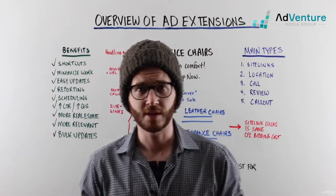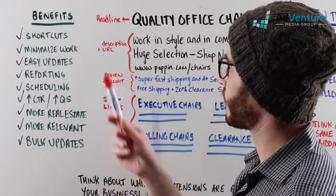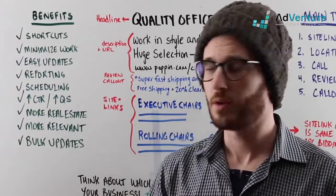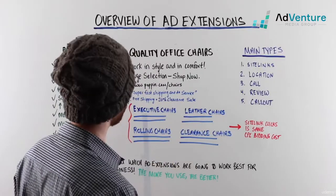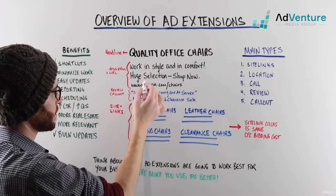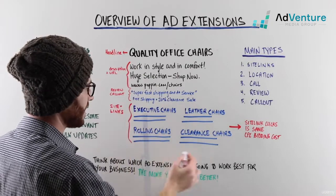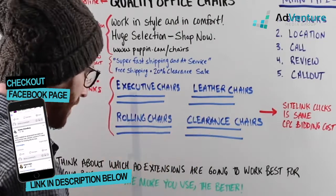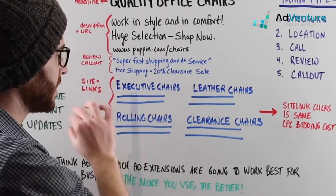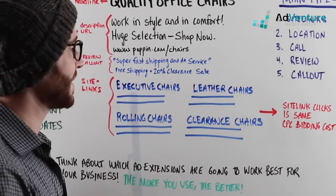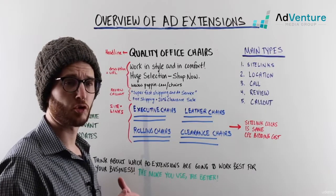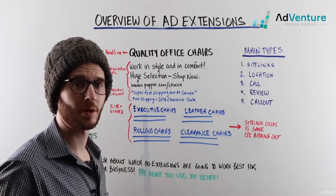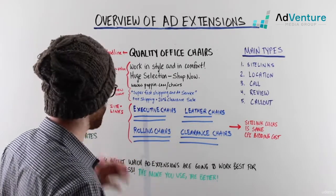Let's talk about some of the benefits of ad extensions. First of all, ad extensions can provide the user shortcuts. For example, if we look at this example of an ad, we have our headline, our description, our display URL, and down here we see sitelink extensions. These are additional links you could configure — each has a headline, two lines of description, and they can all go to separate pages of your website. It's almost like creating a sub-menu of your ad, and sitelink extensions are by far the most important and effective type of extension.